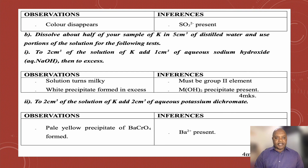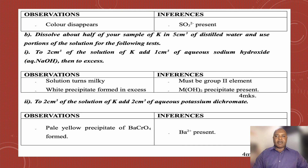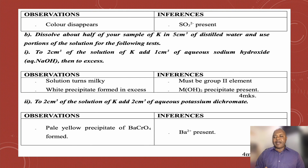Part B: dissolve about half of your sample of K in 5 cm³ of distilled water and use a portion of the solution for the following tests. Test B1: to 2 cm³ of the solution of K, add 1 cm³ of aqueous sodium hydroxide and add to excess. The solution turned murky and a white precipitate was formed in excess. I concluded it must be a Group 2 element and a Group 2 hydroxide.